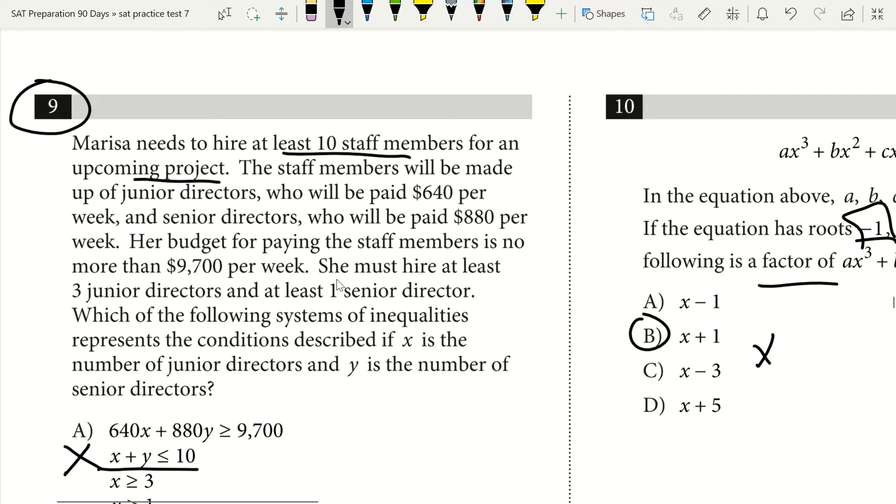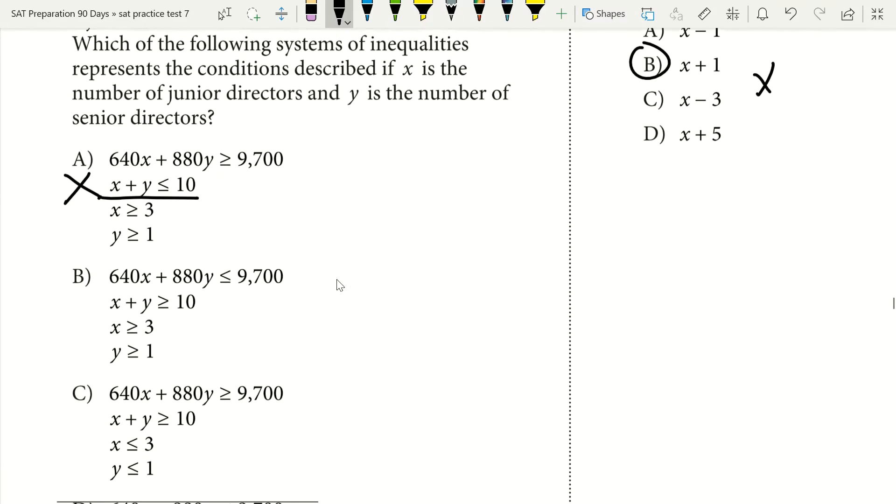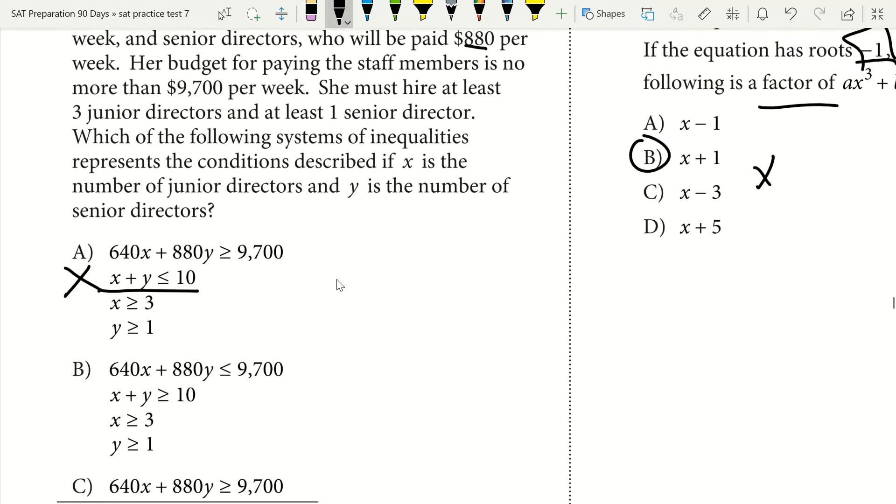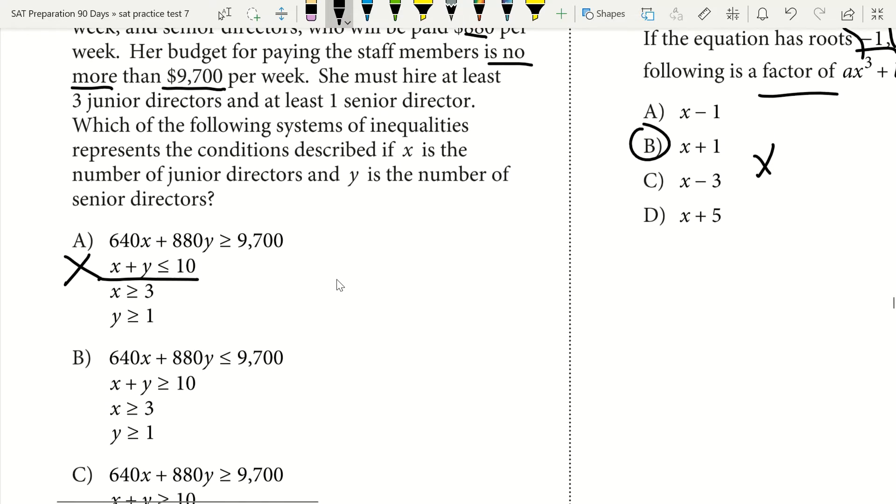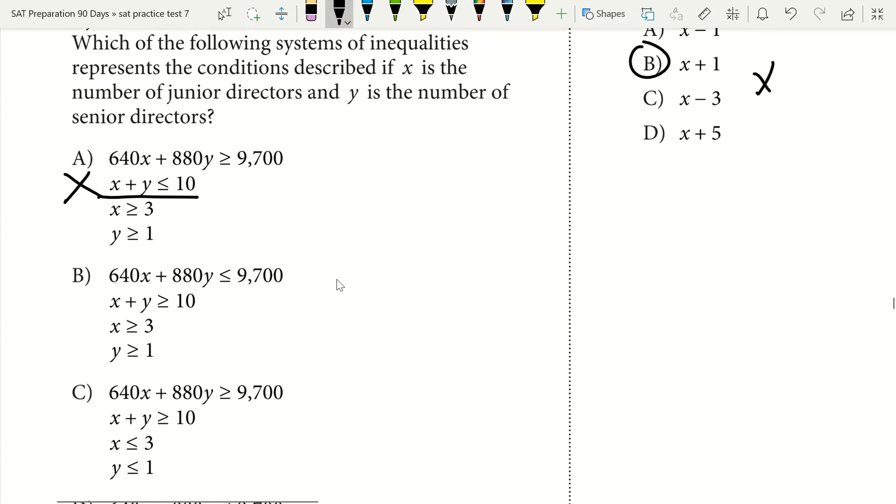The staff members will be made up of junior directors who will be paid $640 per week and senior directors who will be paid $880 per week. Her budget for paying staff members is no more than $9,700 per week. Key part here is no more. She can't spend more than $9,700. Therefore $9,700 must be greater than that $640 plus $880. I'm between B and C here. I can check mark those two.